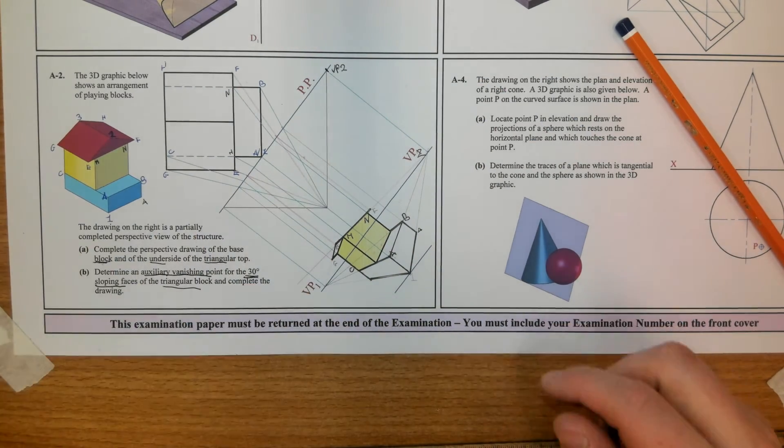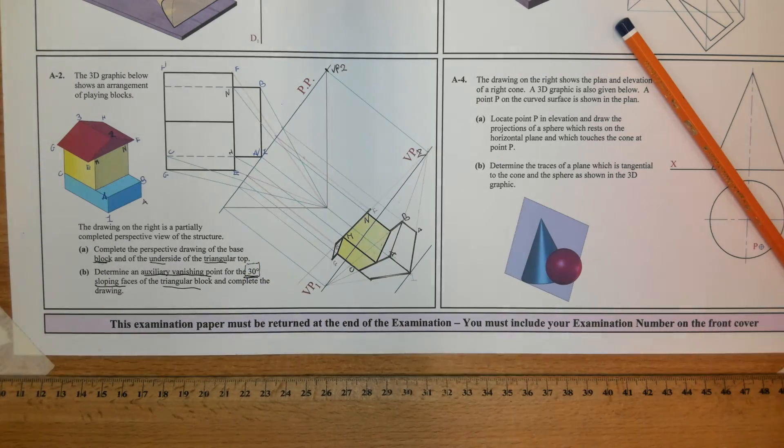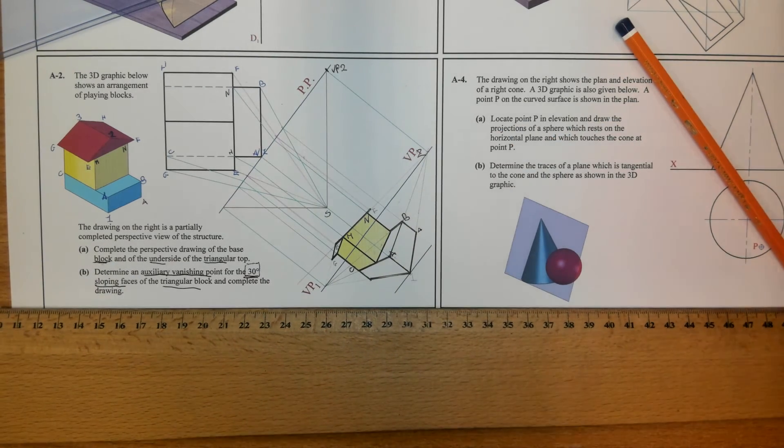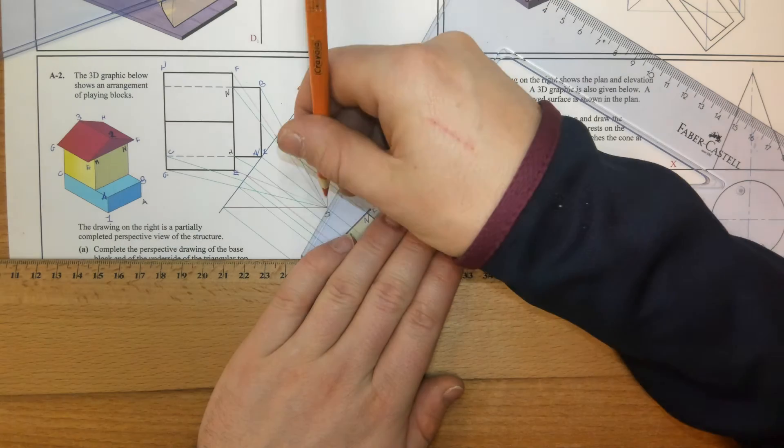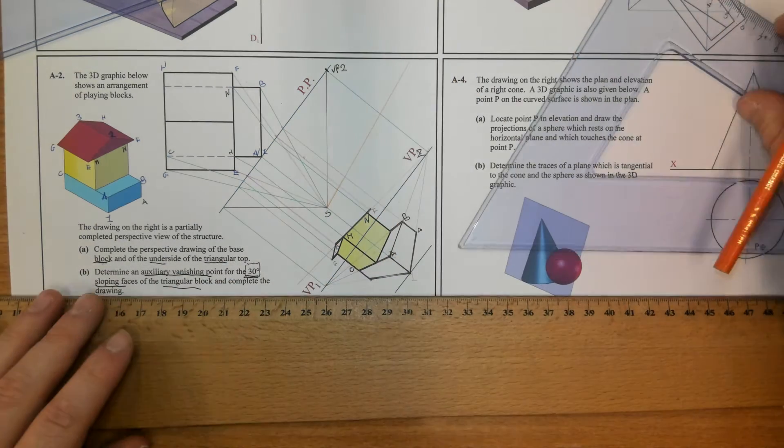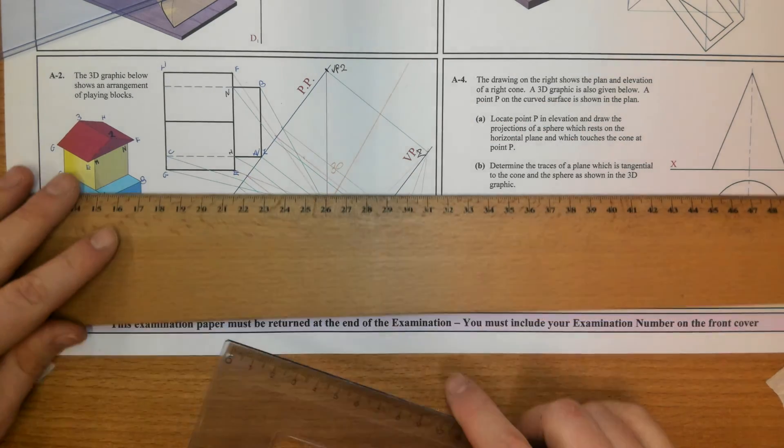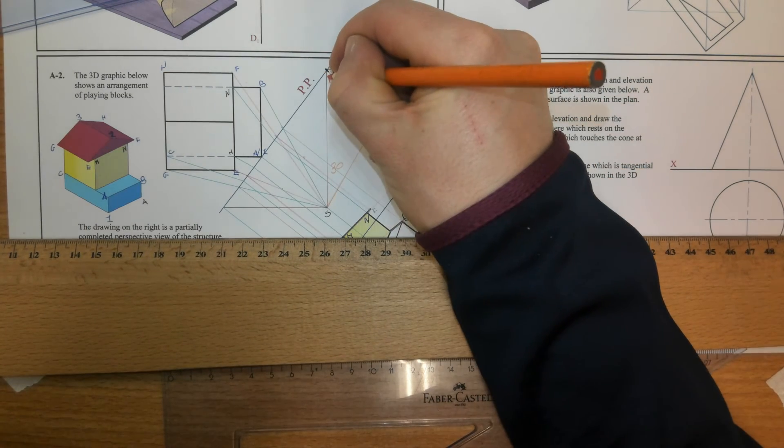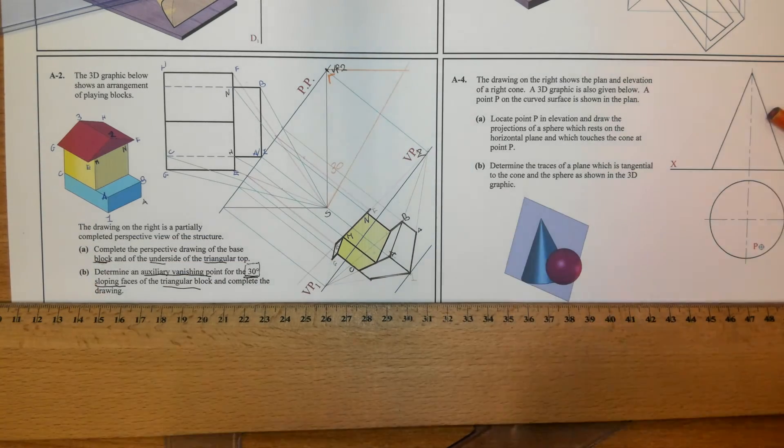Now the angle they're sloping at is the angle you use. So from S I'm going to mark a 30 degree line. So this line is at 30 degrees to S to VP2. So I've marked in that 30 degree line. And from VP2 I'm going to draw a line perpendicular to S to VP2. So that right angle is so important. If you don't have that right angle it won't work.